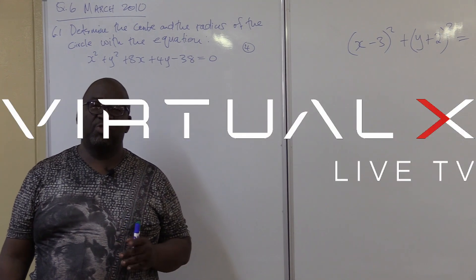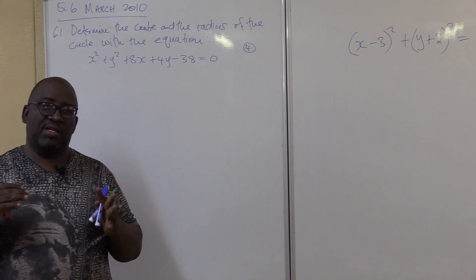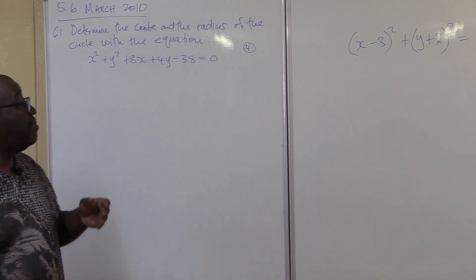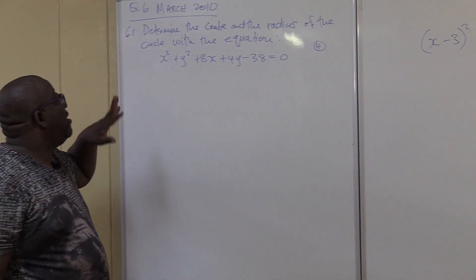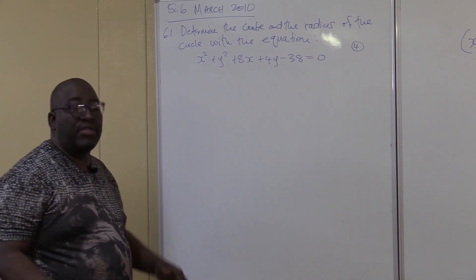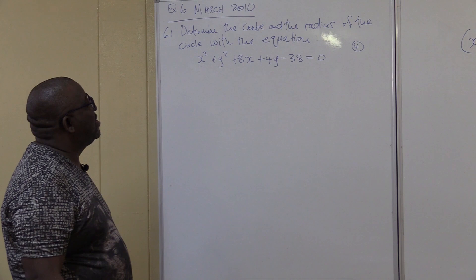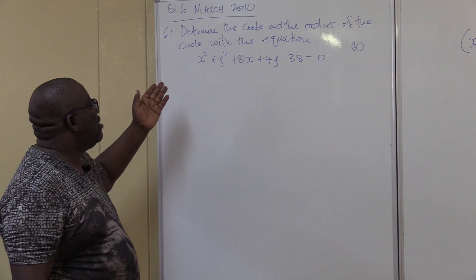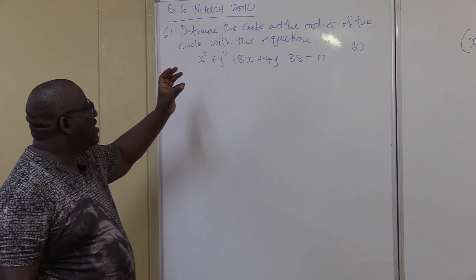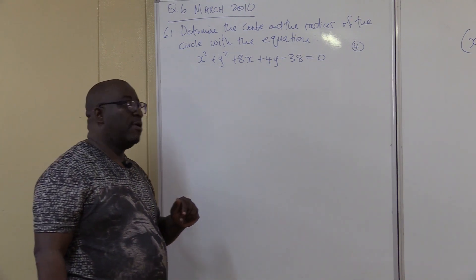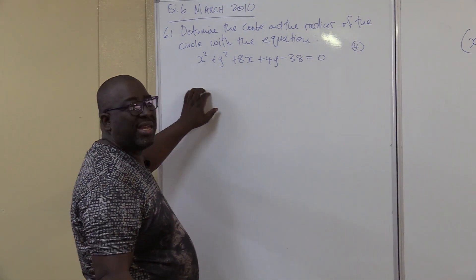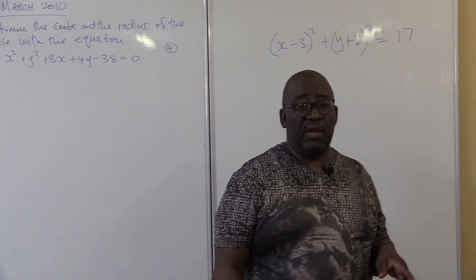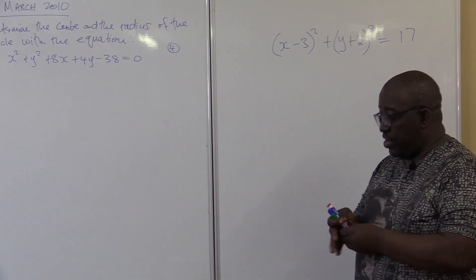We continue with our analytical geometry or coordinate geometry. I want us to look at how they ask you questions on completing a square in this section. This was question 6 in March 2010. The question says: determine the center and the radius of the circle with the given equation. The problem is that it is not in standard form, which would make it easy to find the center and the radius.